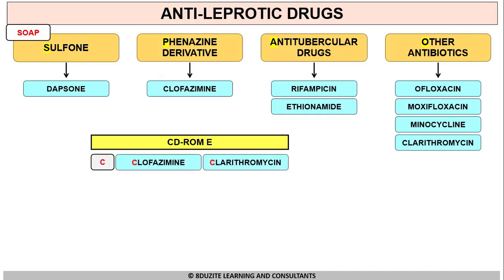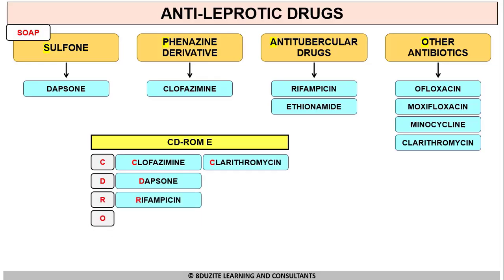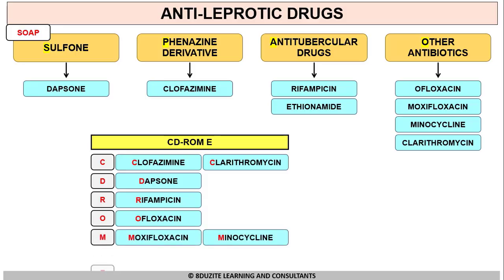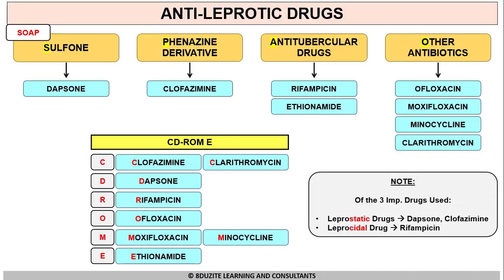C stands for Clofazamine and Clarithromycin, D stands for Dapsone, R stands for Rifampicin, O stands for Ofloxacin, M stands for Moxifloxacin and Minocycline, and E stands for Ethionamide. Of the three important drugs — Dapsone, Rifampicin, and Clofazamine — Dapsone and Clofazamine are bacteriostatic and Rifampicin is bactericidal.